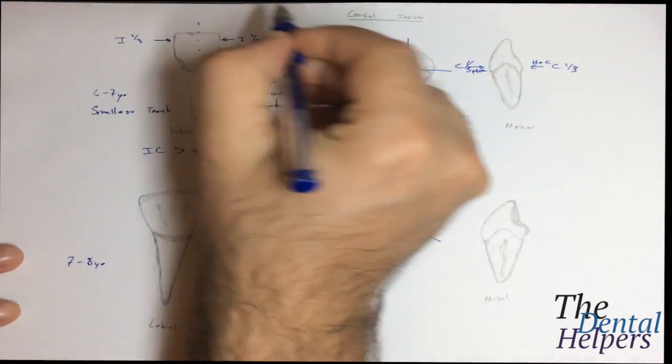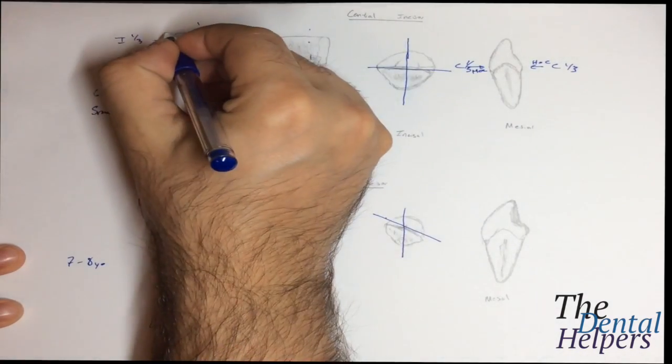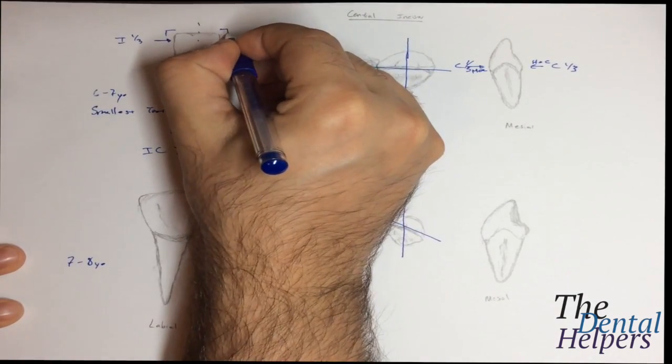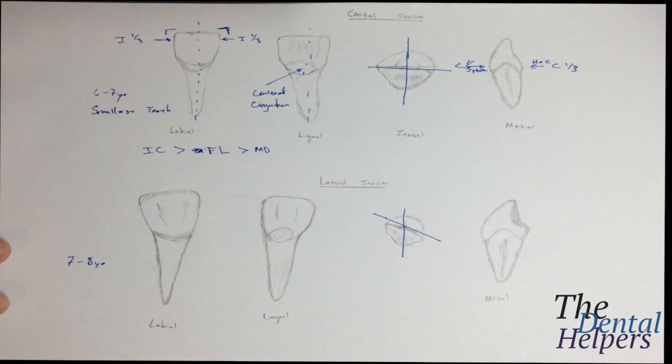The other thing is, as I said, since this is bilateral symmetry, you can expect that the angles, the incisal angles are going to be about 90 degrees. And that is pretty much it on your mandibular centrals. They're pretty boring teeth with respect to the other teeth. I mean, it's the easiest one to memorize.